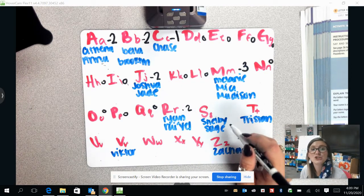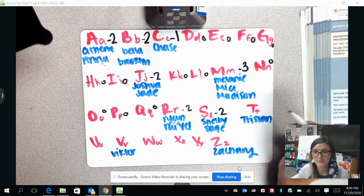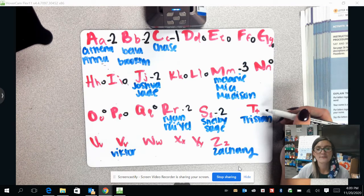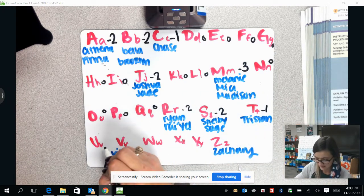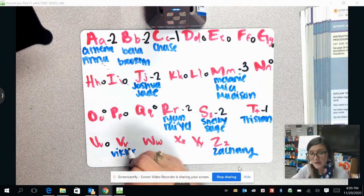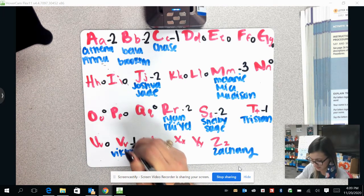Letter S, we have Shelby and Sage. That is two people for letter S. For letter T, we have Tristan. That is one person for letter T. Nobody for U. Letter V, we have Victor. That is one person for letter V.